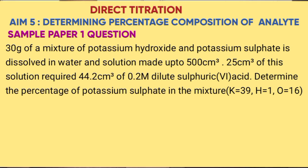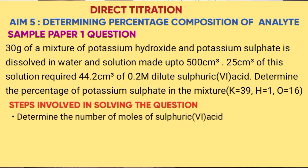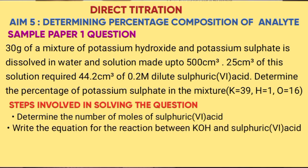Steps to solve the question: Step 1 — determine the number of moles of sulphuric acid, which is the standard solution, using molarity times volume over 1000. Step 2 — write the equation between potassium hydroxide and sulphuric acid. Note that potassium sulphate does not react in this reaction.